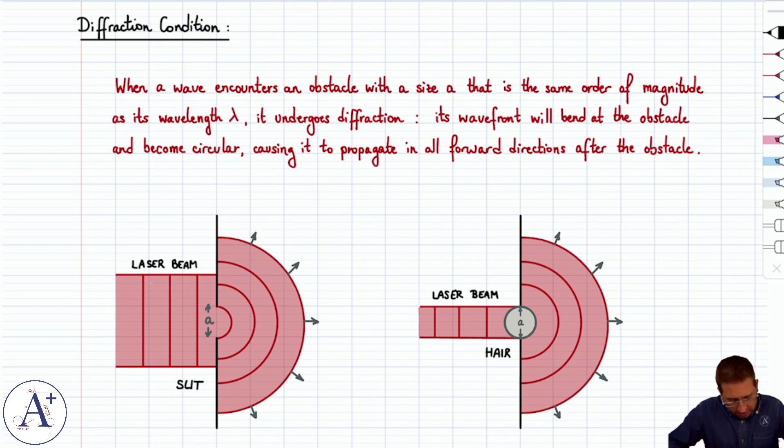What happens is that the wave front that was planar here before the slit bends and becomes circular, causing the light to propagate in all directions after the slit, which is a little bit curious because you might anticipate that if you draw rays of light, it should just go through the slit and the width of the beam after the slit is the width of the slit. But because of diffraction, that's not what happens.